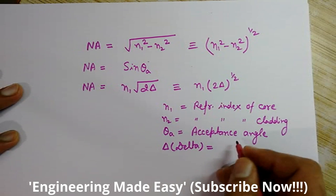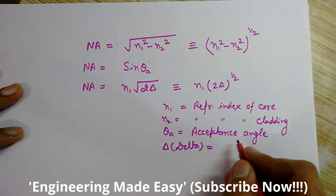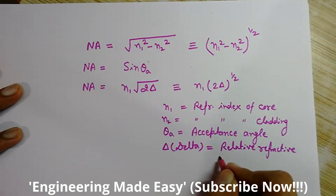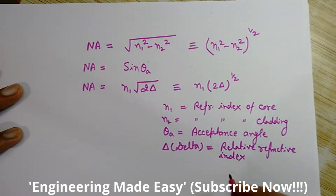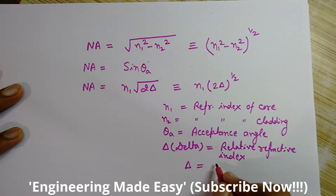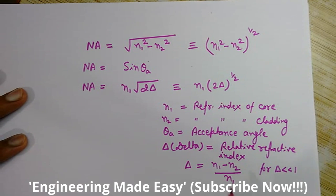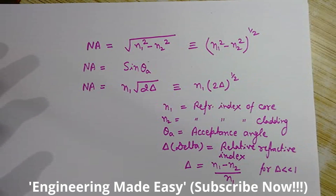A new term here is delta. Delta is the relative refractive index — it is the refractive index of the core relative to the cladding, defined for delta less than 1. So this is the relative refractive index of the core with respect to the cladding. I hope you now have a clear understanding of the acceptance angle and numerical aperture.